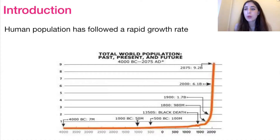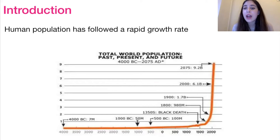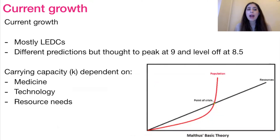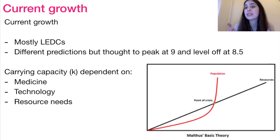A human population has followed a rapid growth rate, especially recently in the past 100 or 200 years. You can see this in the graphical representation below — we've really accelerated the growth rate of human populations recently. With the addition of medicine and technology, we've really pushed the limits of growth. Our current growth mostly comes from less economically developed countries. Current predictions on our carrying capacity suggest we will peak at around nine billion and then level off at around 8.5 billion.